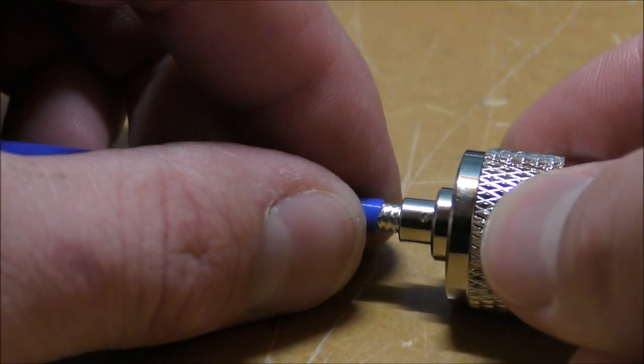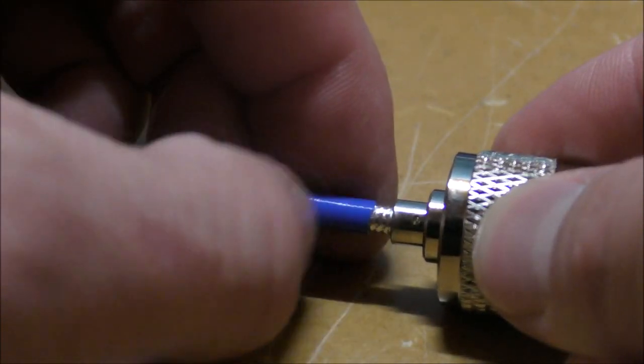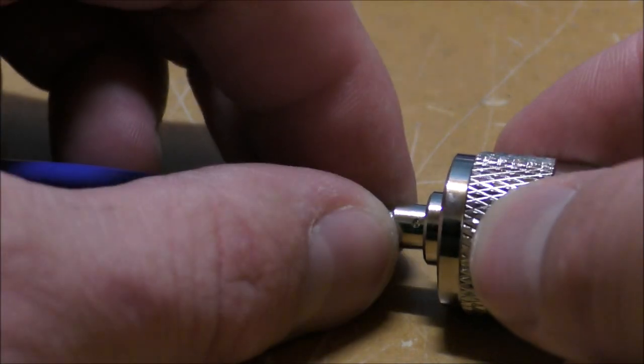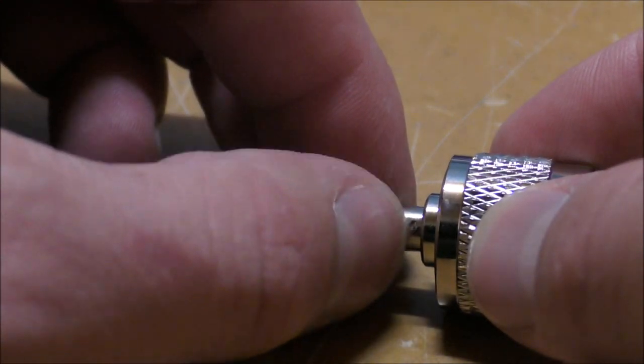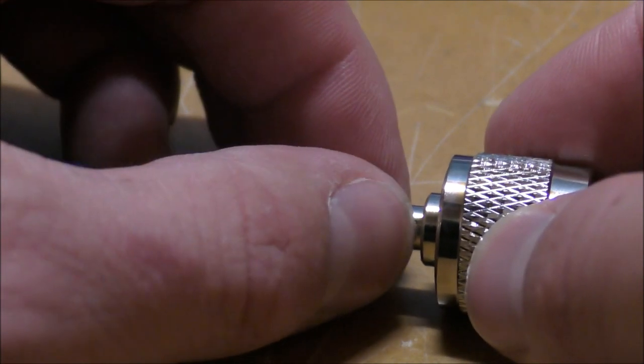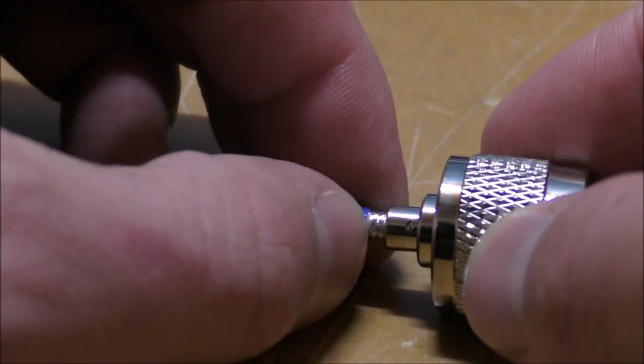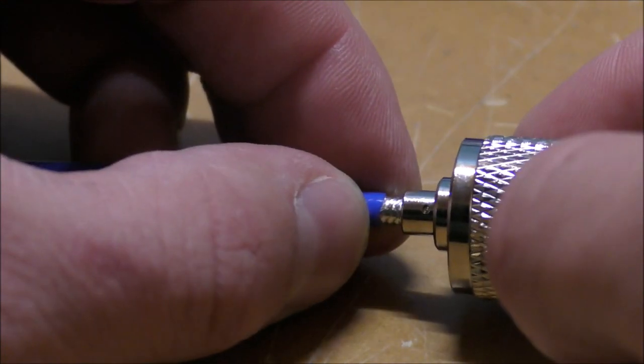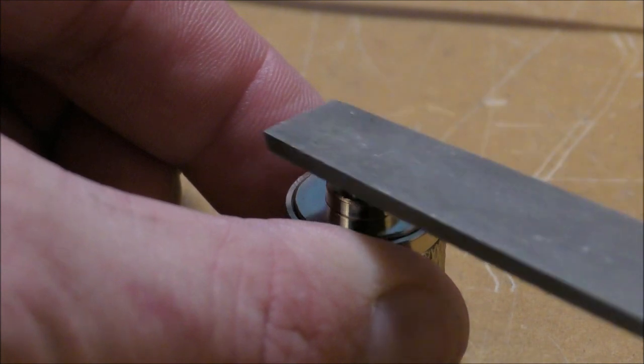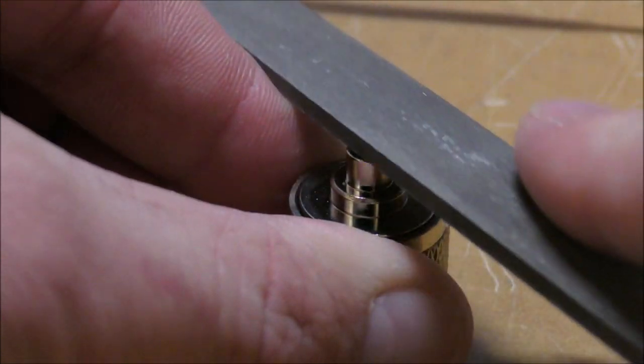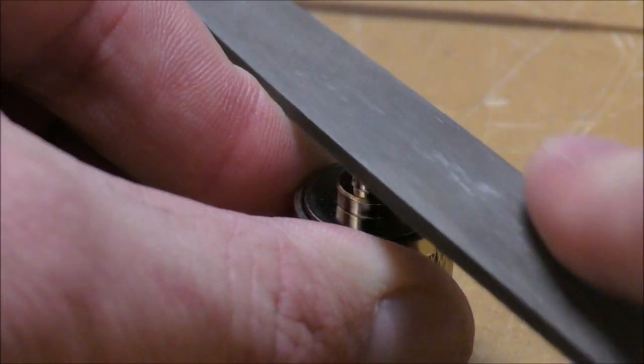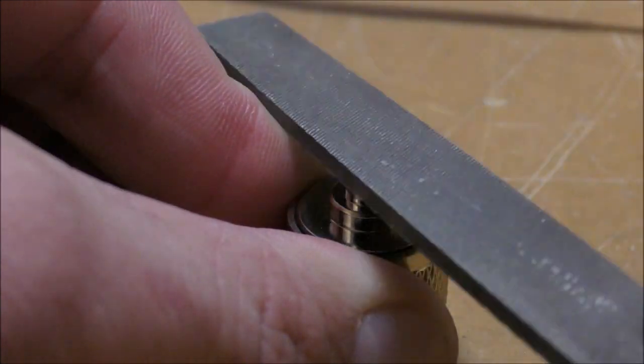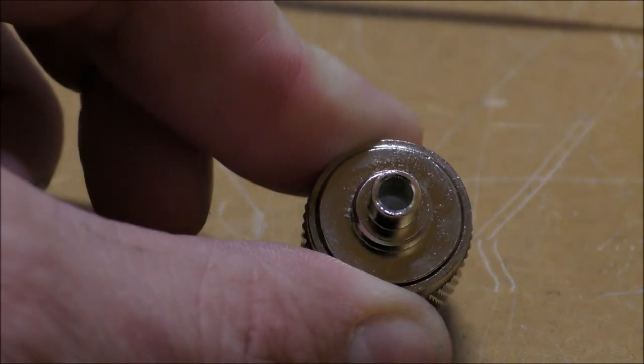Now I tend to find that it's easier to solder this if you've got a very hot iron. Alternatively, you can file where that hole is, file a bit of the outer shell of the connector. So all I'm doing is just filing the ends of the connector just so that the solder flows a little bit better.